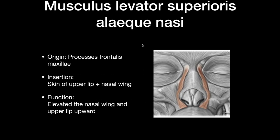Musculus levator labii superioris alaeque nasi starts at the processus frontalis maxillae and inserts at the skin of the upper lip and also the nasal wing. The function is that it elevates the nasal wing and the upper lip upwards — when you smile, you'll notice that the nose also goes a little upwards.